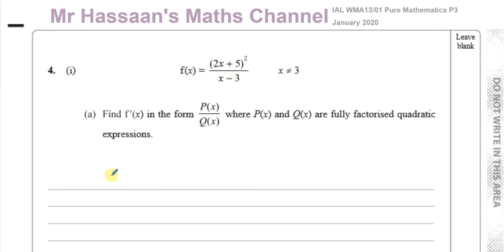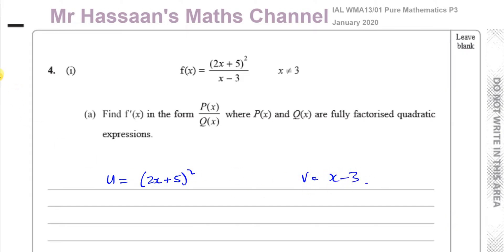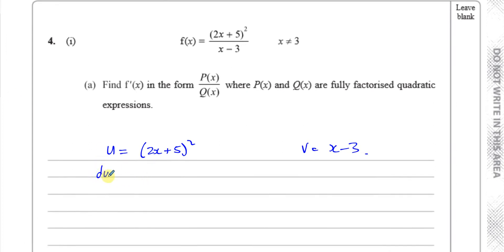We have a quotient of two separate functions, so we have to use the quotient rule. For the quotient rule, the numerator must be called u and the denominator must be v. I need to find the derivative of u, du/dx, which I'll find using the chain rule — that's much easier than expanding.